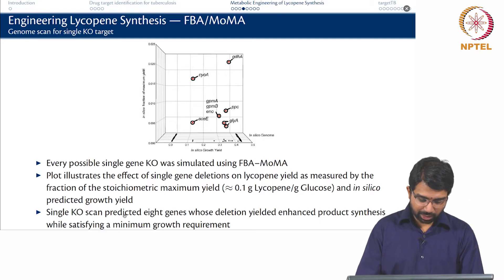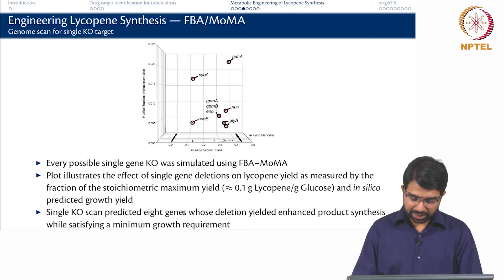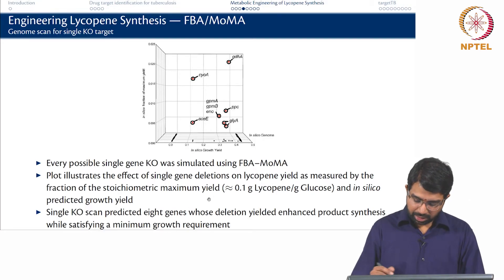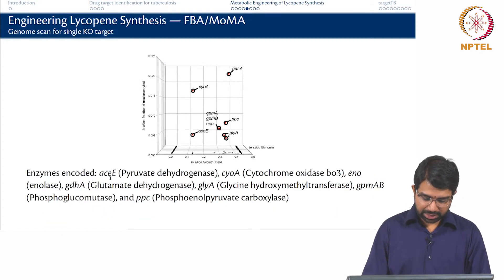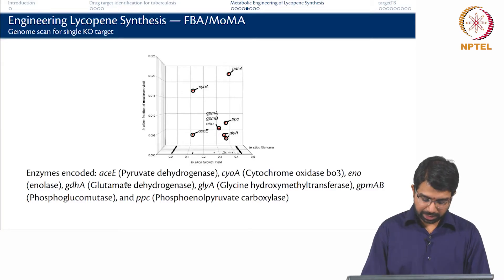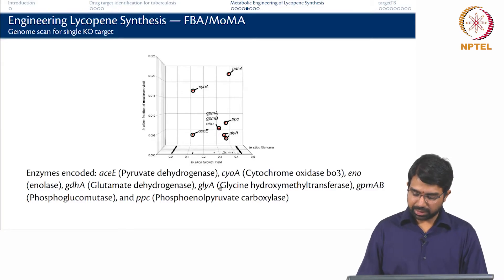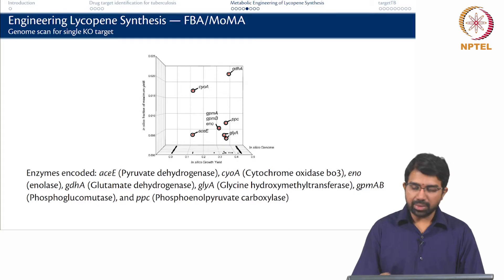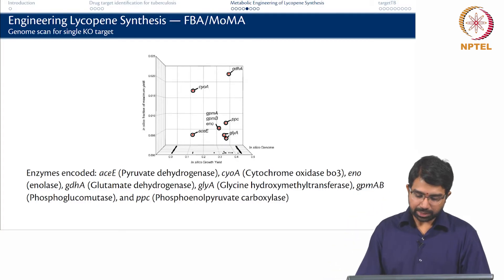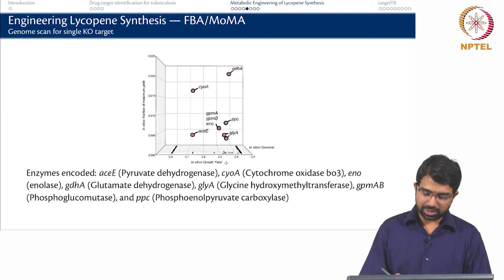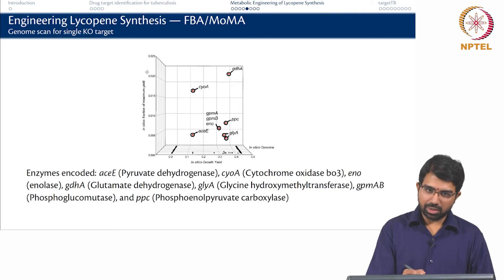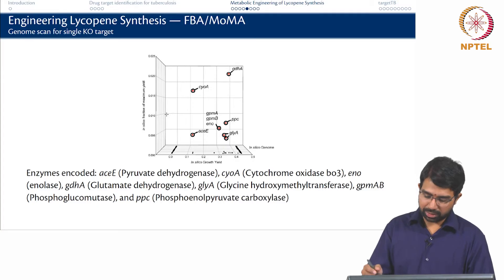They performed a single knockout scan and predicted 8 genes whose deletion yielded enhanced product synthesis. These enzymes included aceE, cytochrome oxidase, glutamate dehydrogenase, glycine hydroxymethyl transferase, and others. For example, pyruvate dehydrogenase is probably involved in pyruvate production, which is an important input to the lycopene pathway.